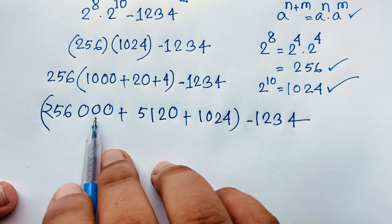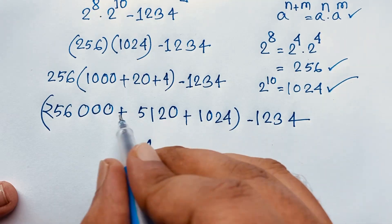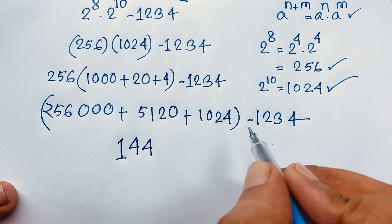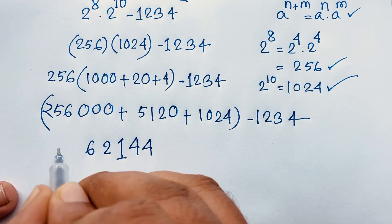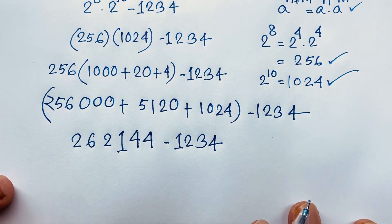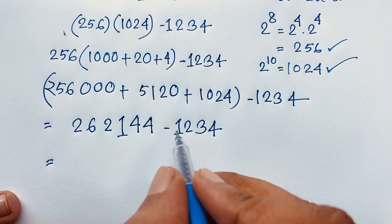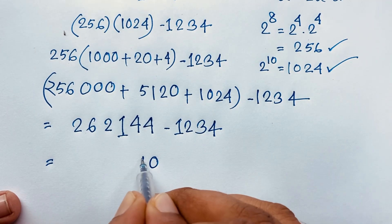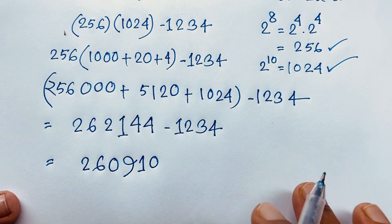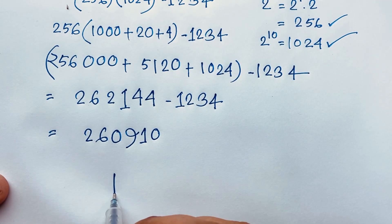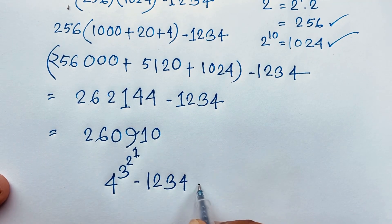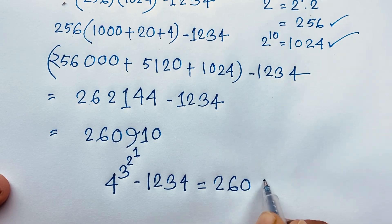Now, 256000 plus 512 plus 1024 plus 1024 minus 1234 — computing step by step: combining the parts we get digits 2, 6, 1, then 4 and 4, then 1, 9, then 2, 6. Our final answer is 260910. So 4 to the power 3 to the power 2 to the power 1, minus 1234, equals 260910.